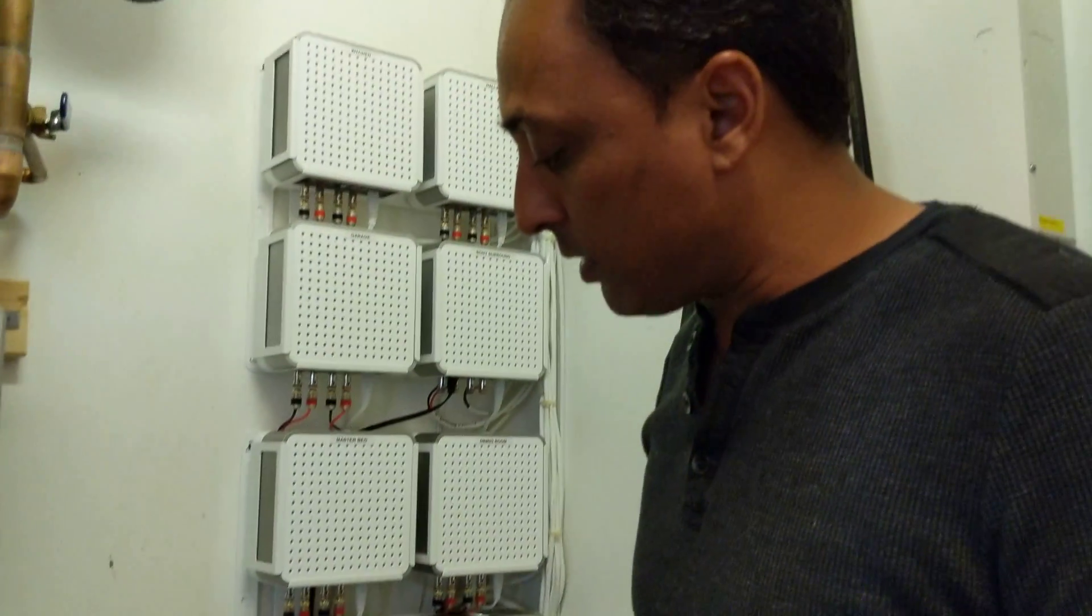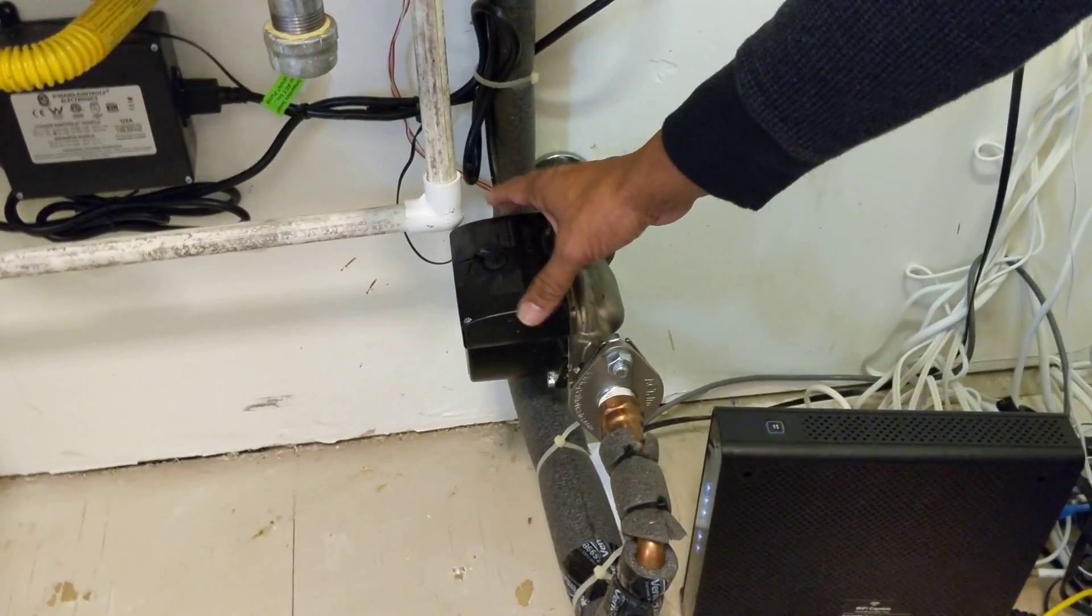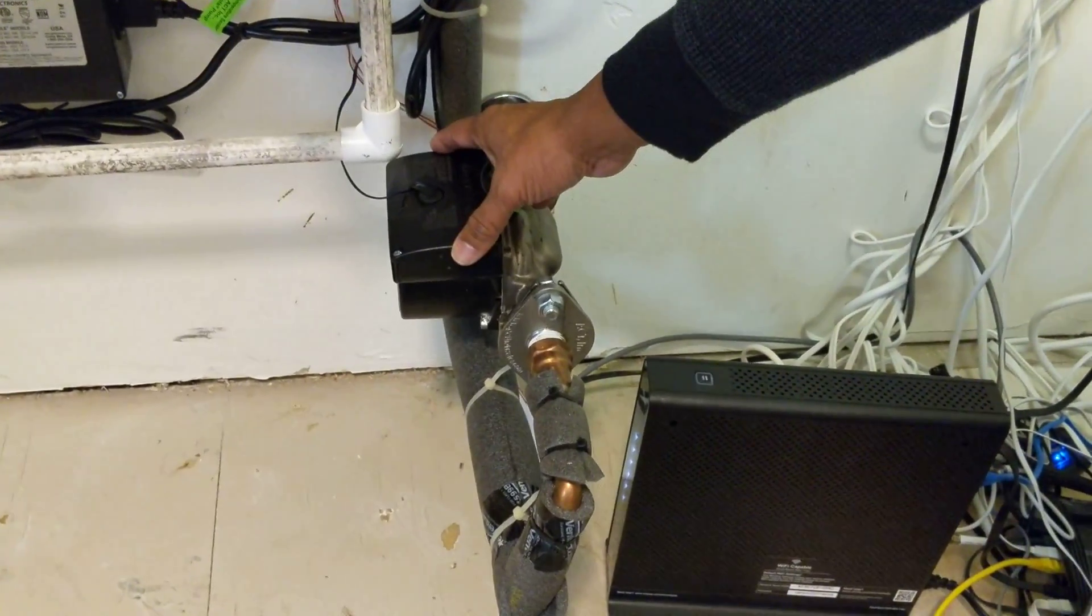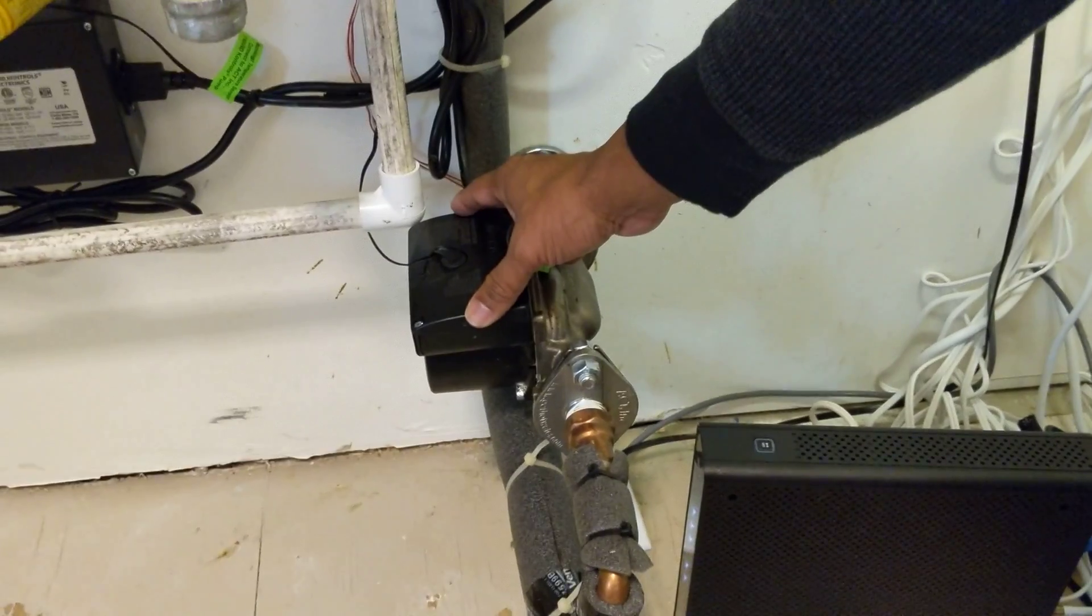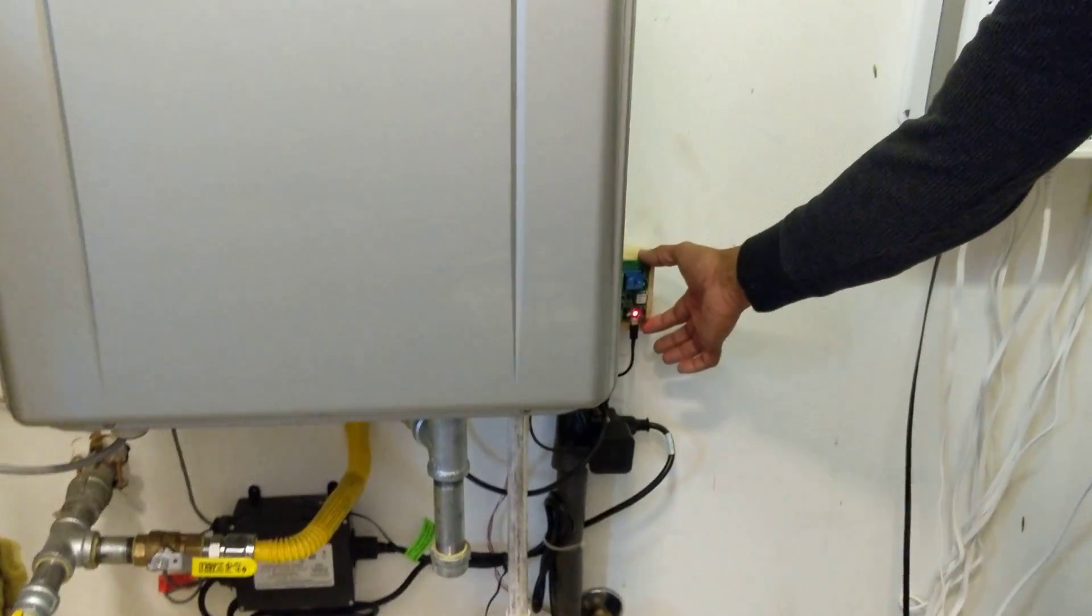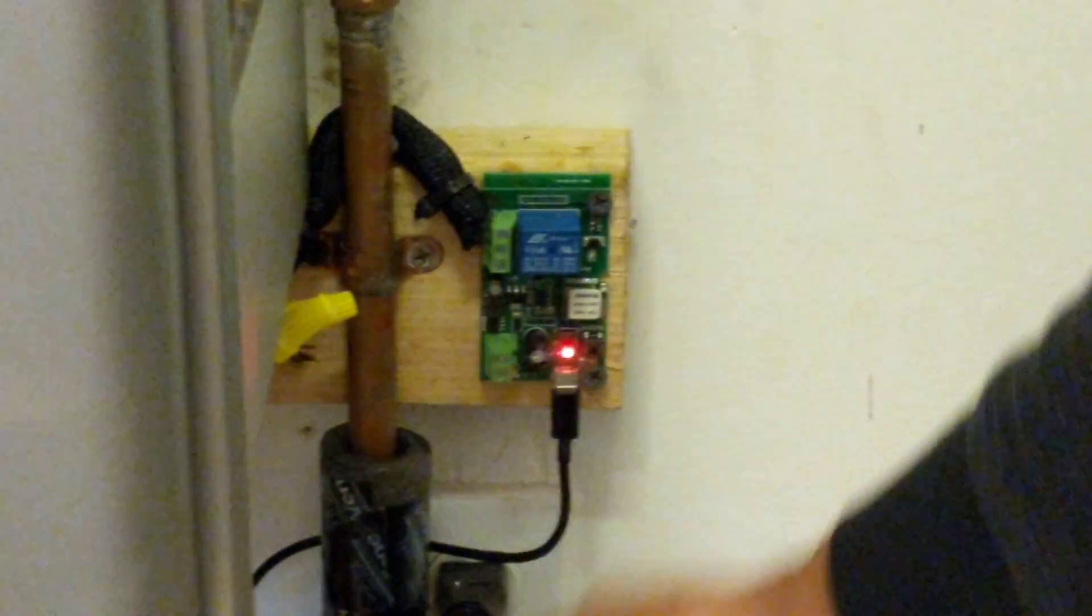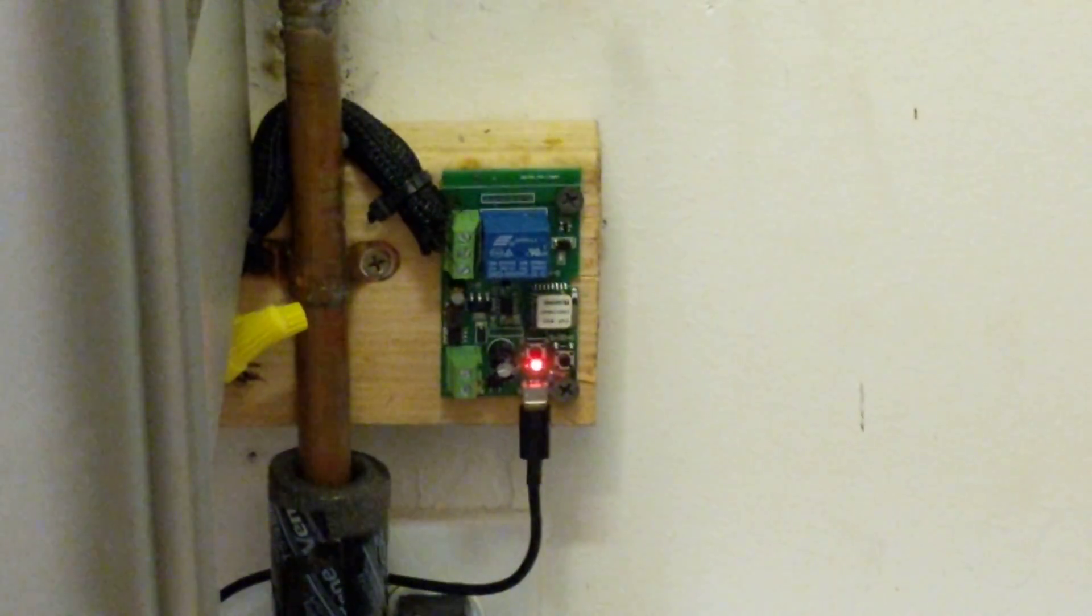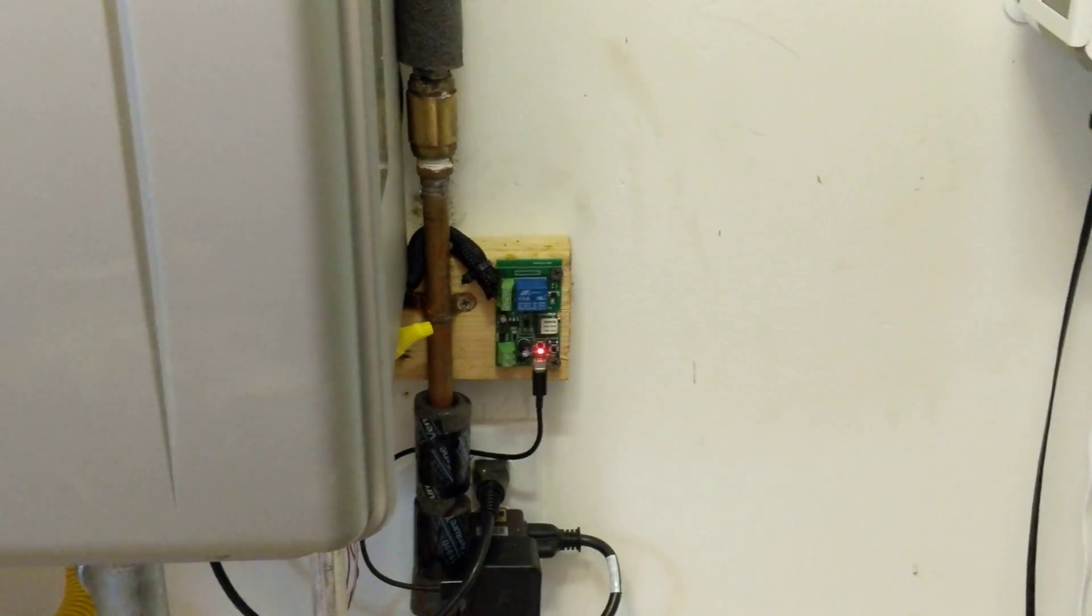The other thing is if you don't have a recirculating line, you can put this literally in the bottom of the sink in your furthest bathroom from the water heater. You can put this under the sink and do the same setup that I did. And you can literally put this 12-volt trigger mechanism instead of having a push button doorbell, you can just use this. So that even saves you time from running wire and doing all that great stuff.